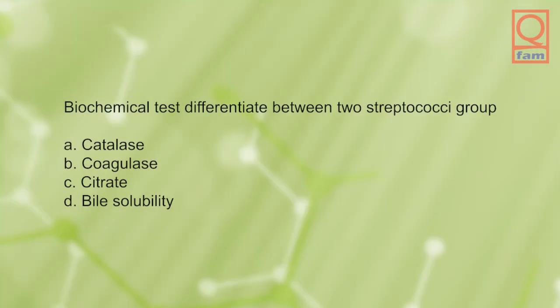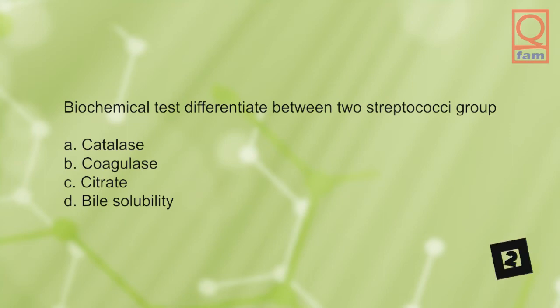Biochemical test to differentiate between two streptococci groups: A) catalase, B) coagulase, C) citrate, D) bile solubility. The answer is D, bile solubility.